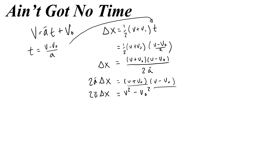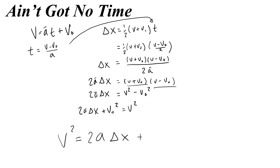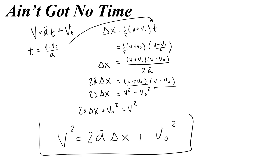To clean it up a little more, I add v-naught squared to both sides, giving me v squared equals 2a·delta x plus v-naught squared. That is the equation — we're going to call this the 'ain't got no time' equation, because you use it when you don't have time to find time. Let's use it.